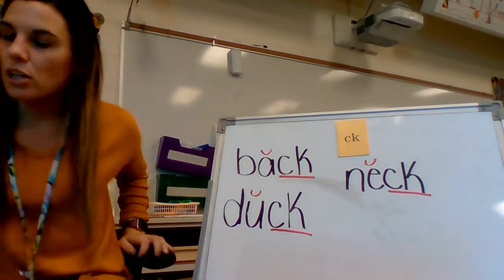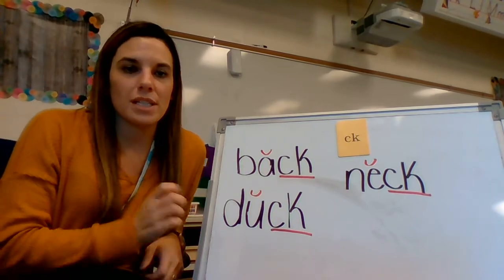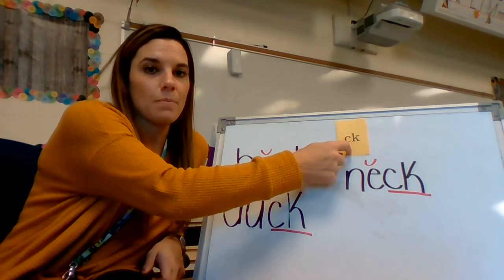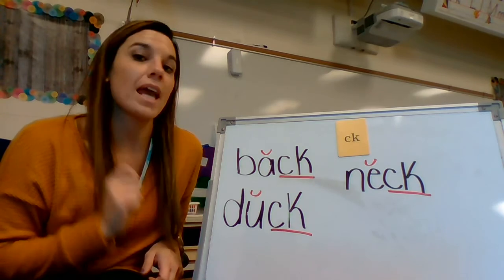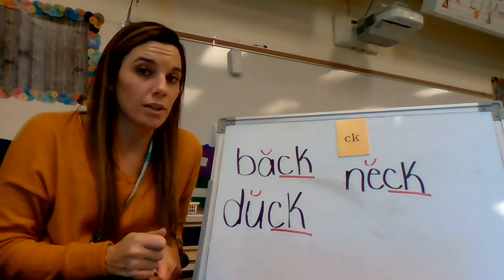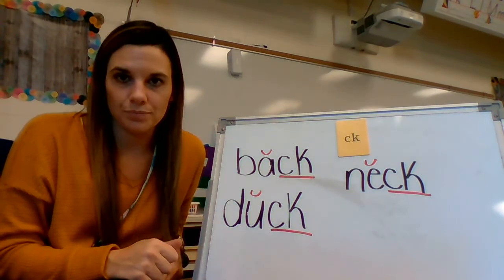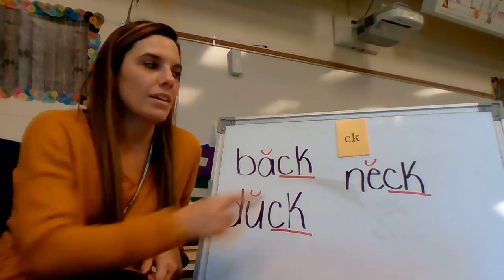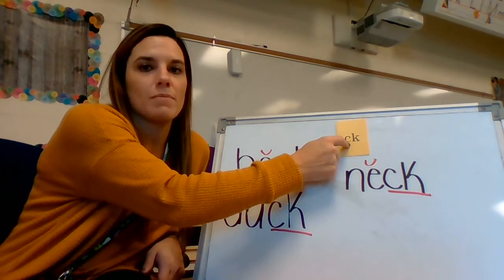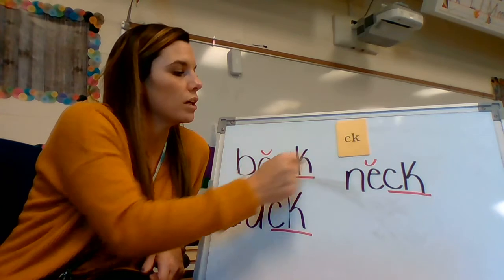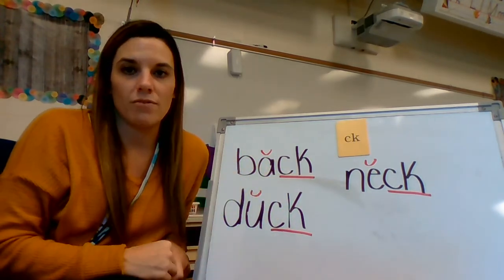My whole point for showing you this lesson is so that you can see when you're supposed to use the digraph CK — it is always going to come at the end of a word after a short vowel. Never at the beginning of a word. Never comes at the beginning of the word. Only at the end of a word after a short vowel.